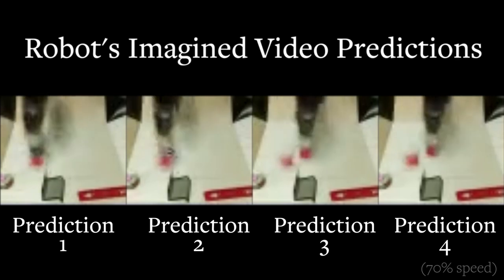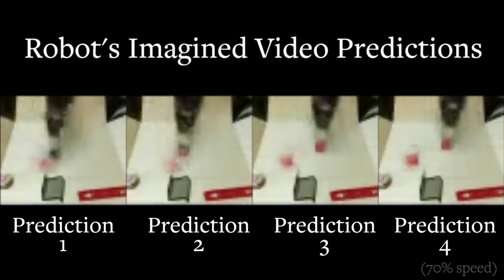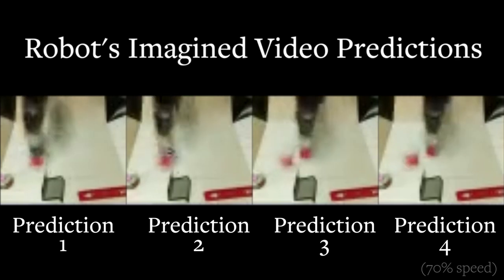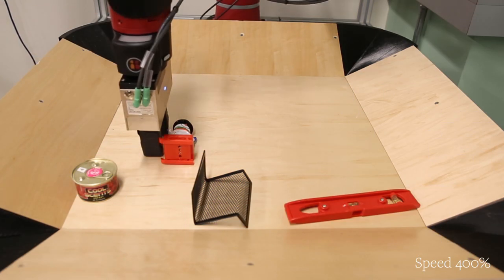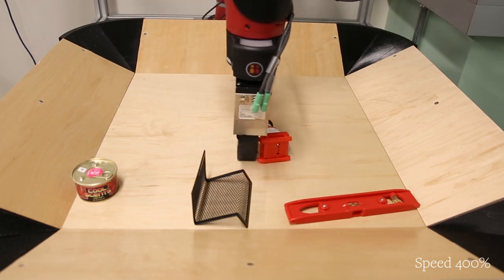It produces video scenes that haven't really happened yet, but that it thinks will happen if it pushes the object a certain way, and then carries out the one it decides will get the fastest results.